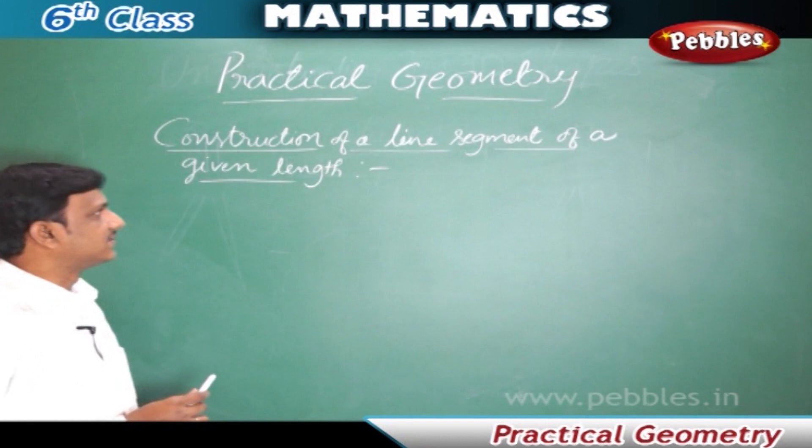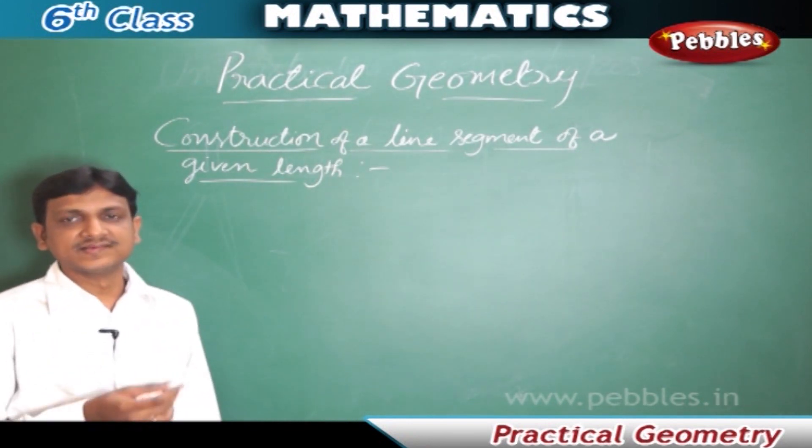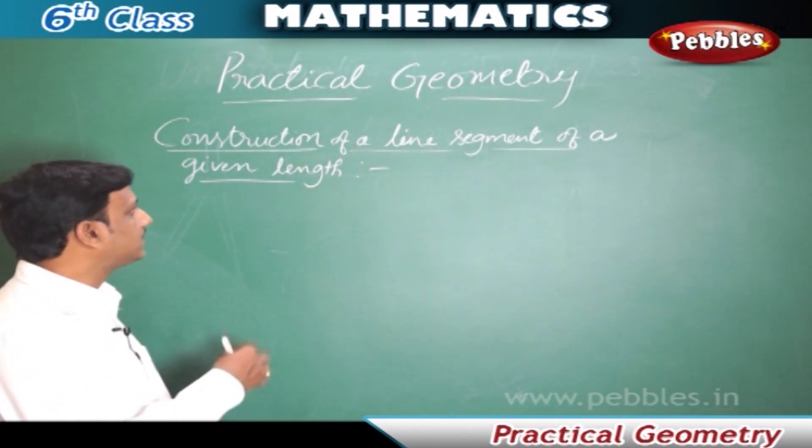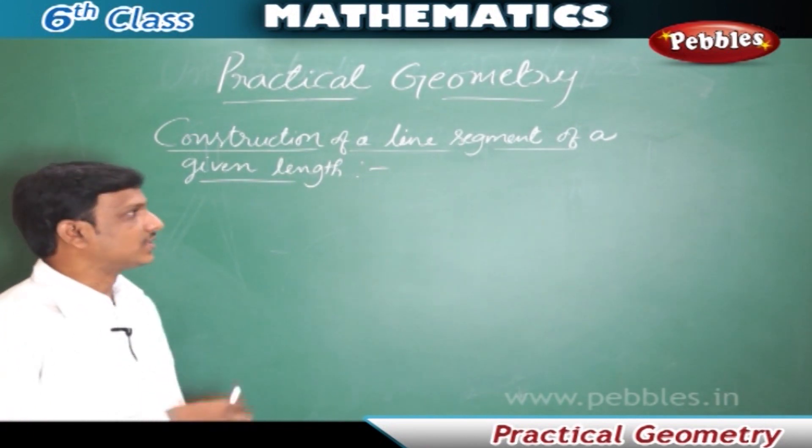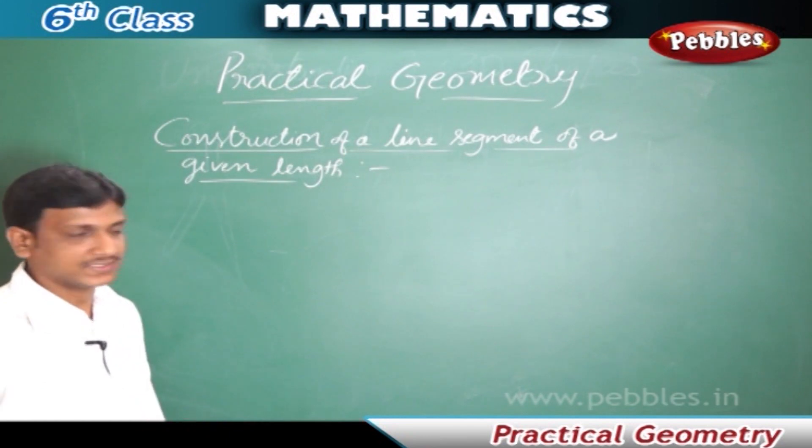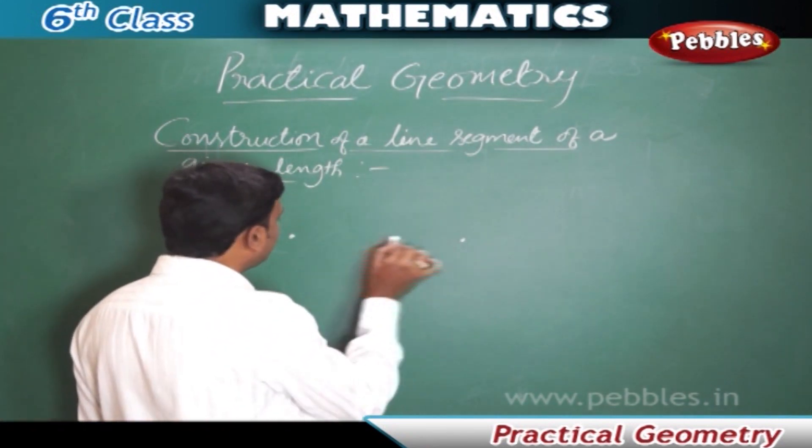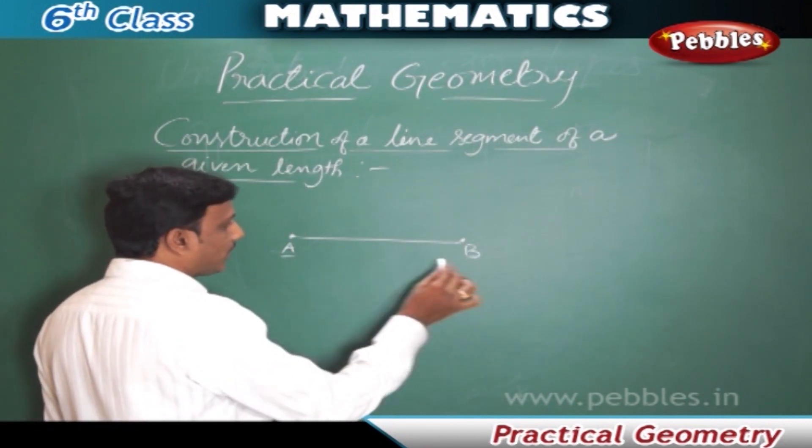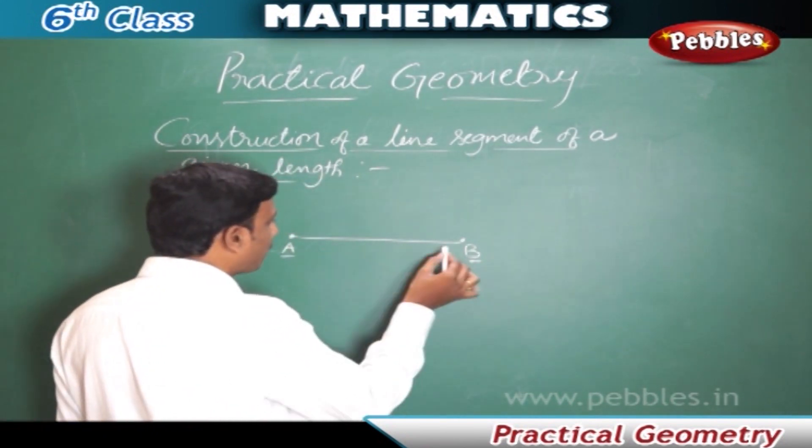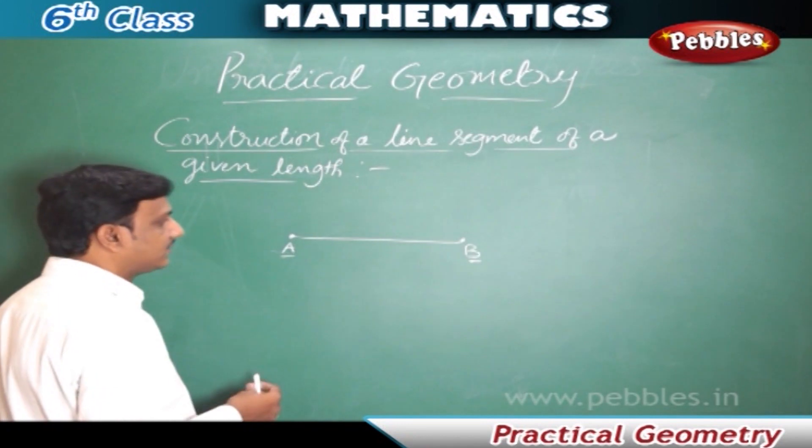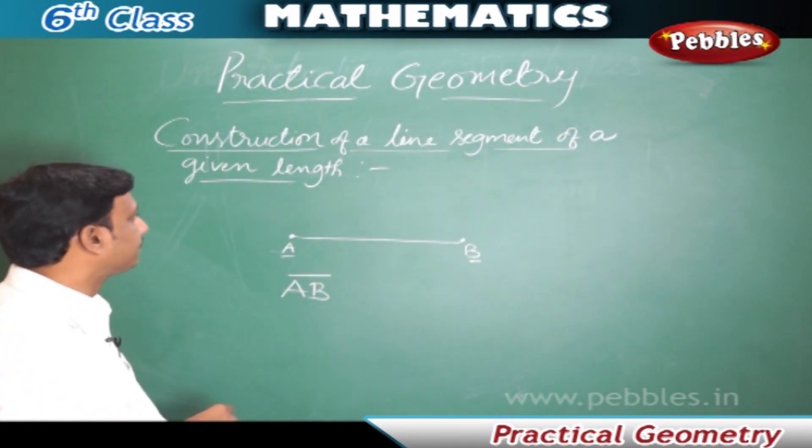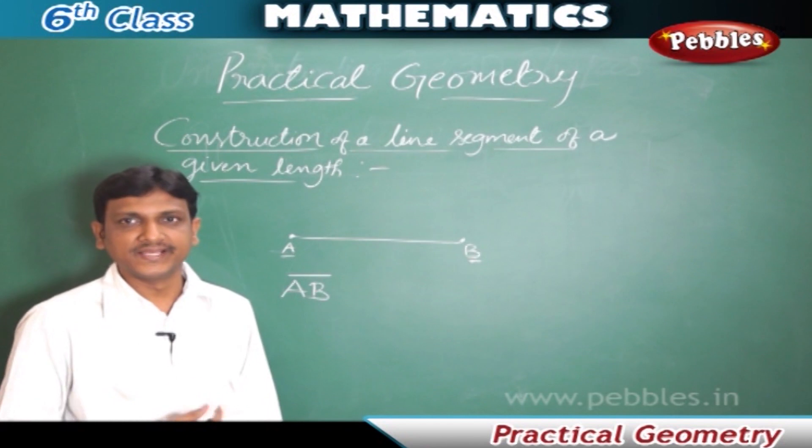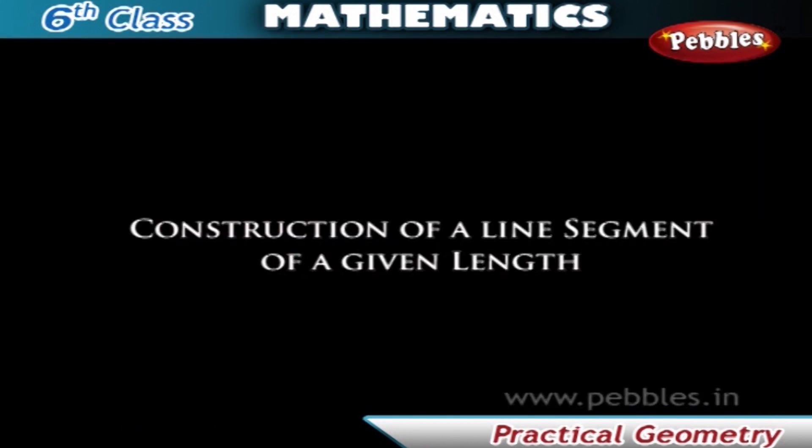Construction of a line segment of a given length. In this lesson, we will learn how to construct a line segment using geometrical instruments. We already know what a line segment is. A line segment is the least possible distance between two given points, say for example point A and B. The line connecting these two points with the least possible distance is the line segment. Now let us see how to construct such a line segment using geometrical instruments.